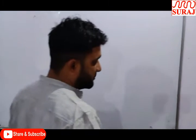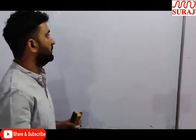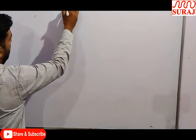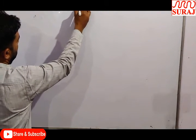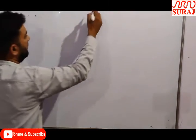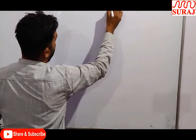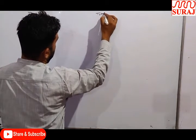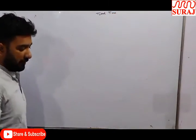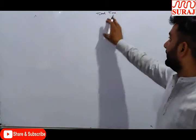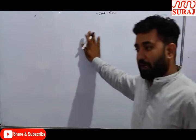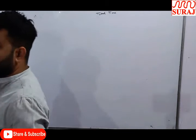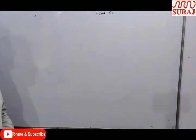Good morning everyone. Today we will discuss average speed. The average speed of a body can be calculated by total distance travelled by the body divided by total time. Average speed of any body is measured by total distance divided by total time taken by the body. Now we will focus on numerical problems.